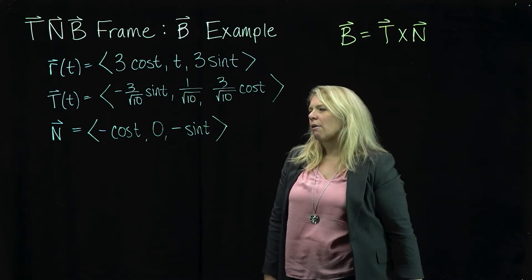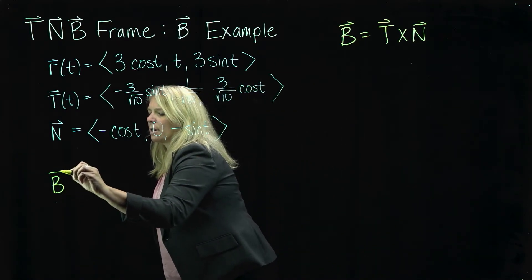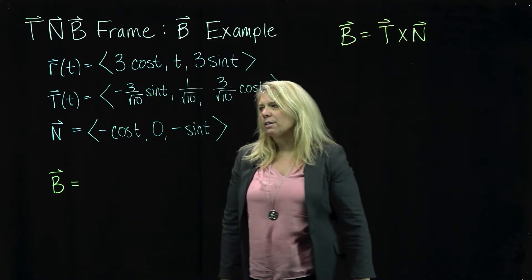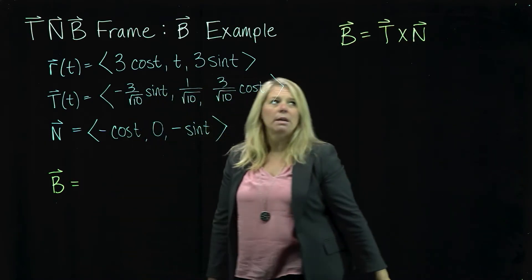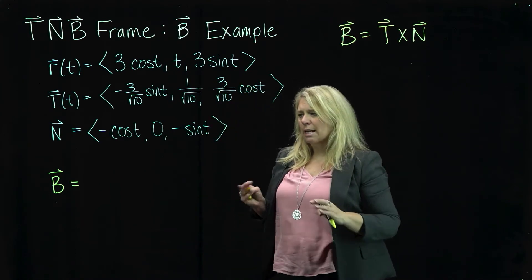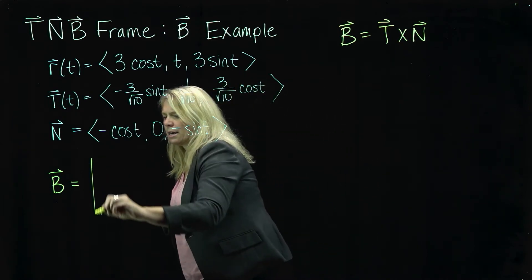So now we're going to go ahead and calculate this cross product and I'm going to make sure again that I label all of my vectors here. So I've got my T, my N, and then my B vector that I'm going to calculate here. Okay, so we're going to do T cross N. So we're going to set up that matrix and calculate that cross product here.